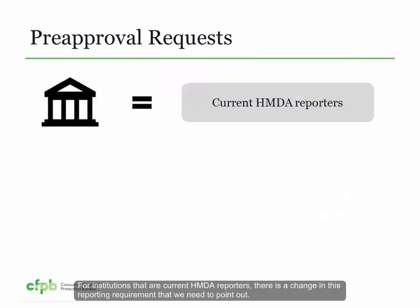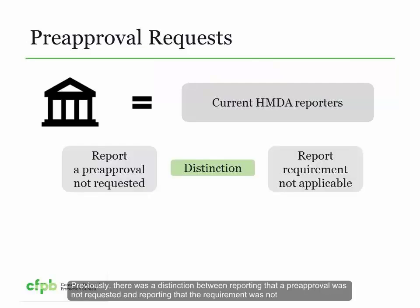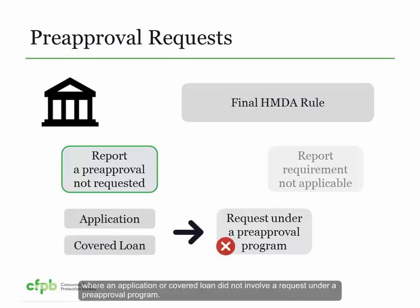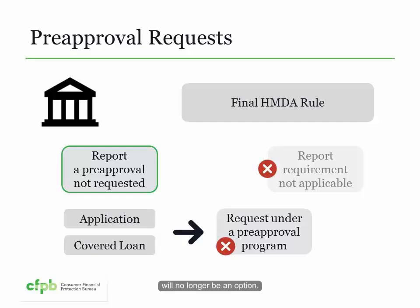For institutions that are current HMDA reporters, there is a change in this reporting requirement. Previously, there was a distinction between reporting that a pre-approval was not requested and reporting that the requirement was not applicable, such as when an institution does not have a pre-approval program. As part of the final rule, the Bureau changed this so that financial institutions should report pre-approval not requested in all circumstances where an application or covered loan did not involve a request under a pre-approval program. Reporting that the requirement is not applicable will no longer be an option.